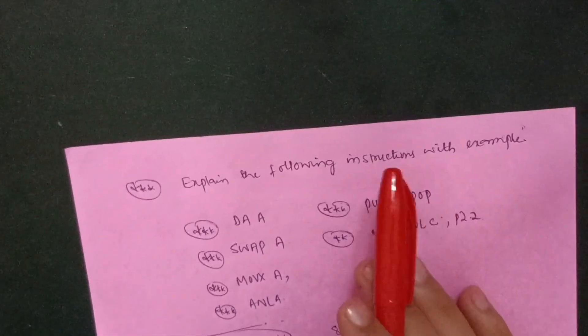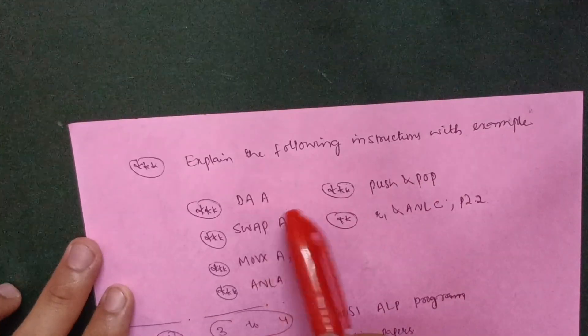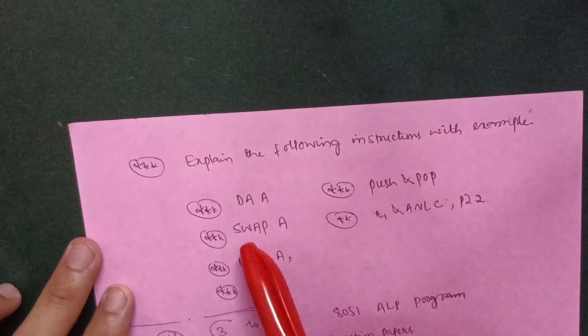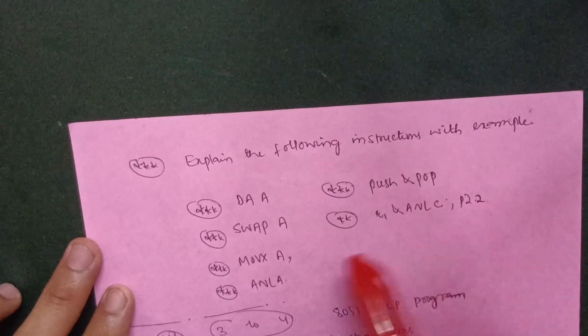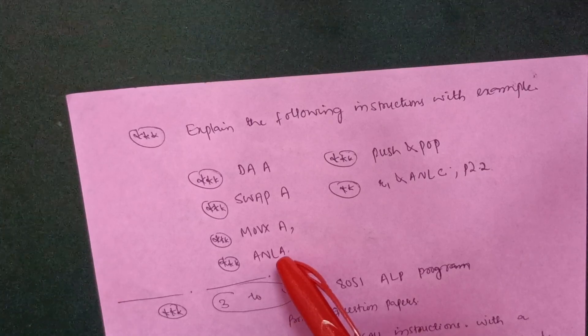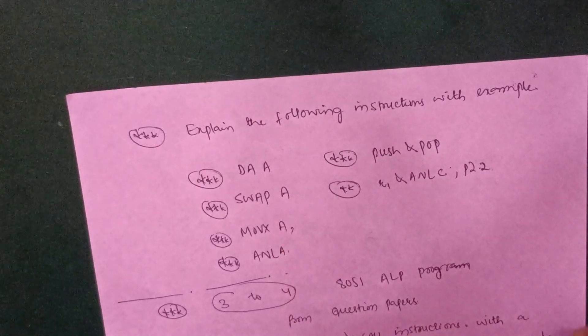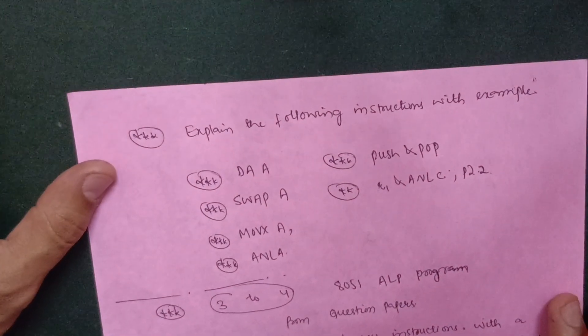The following instructions with examples like DAA, PUSH and POP, SWAP A, ANL A, CLR C, P2.2, MOVX A, and LCALL. These are the following instructions with examples you have to explain. These are the questions which are frequently asked in the VTU examination.